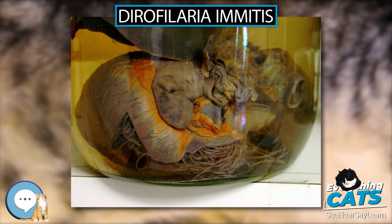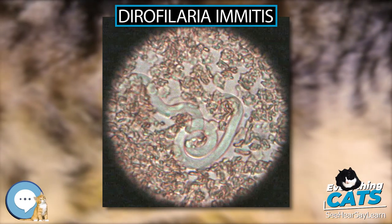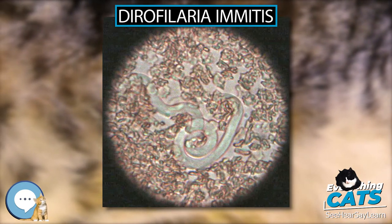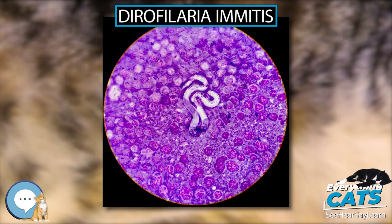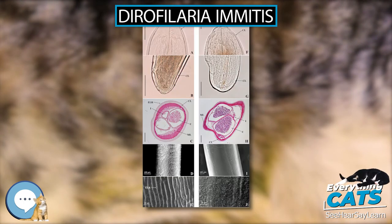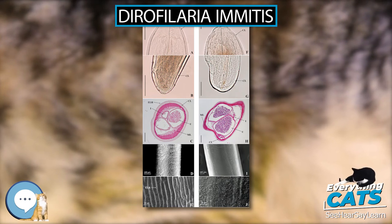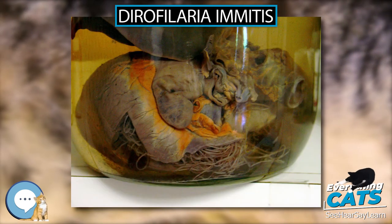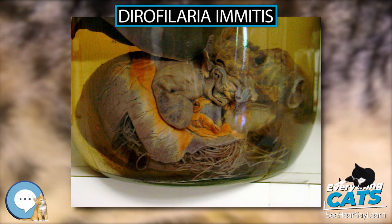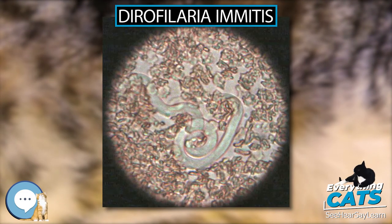Annual heartworm testing is highly recommended for pet owners who choose to use minimal dosing schedules. Testing your dog annually for heartworms and other internal parasites is part of a complete prevention healthcare program, even if your dog is on a monthly preventive. Heartworm prevention for cats is available as ivermectin (HeartGuard for cats), milbemycin (Interceptor), or the topical selamectin (Revolution for cats), and Advantage Multi (imidacloprid plus moxidectin) topical solution.